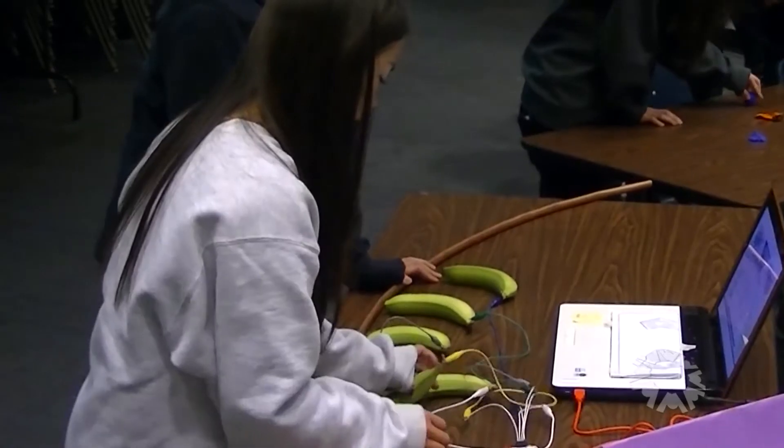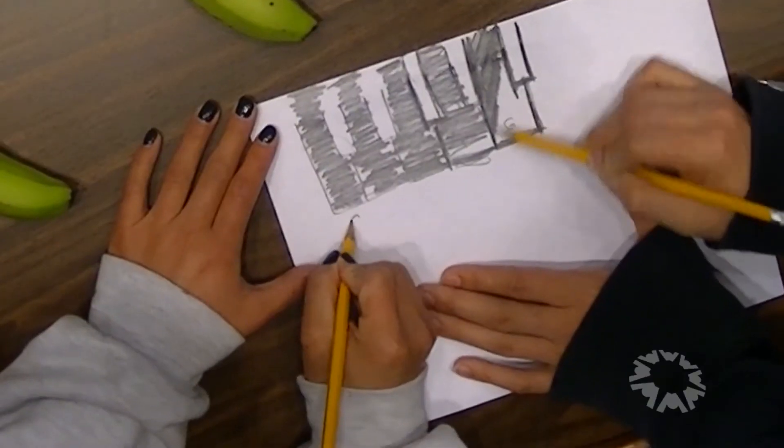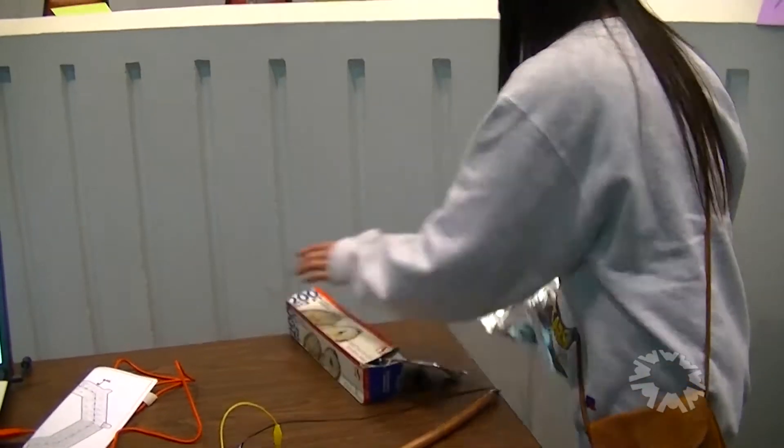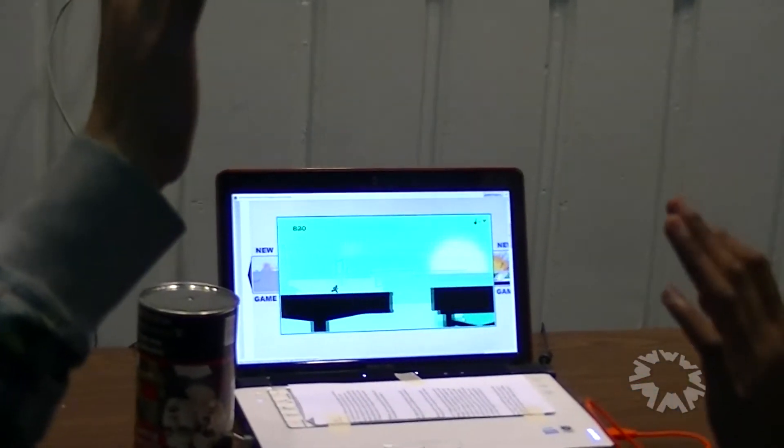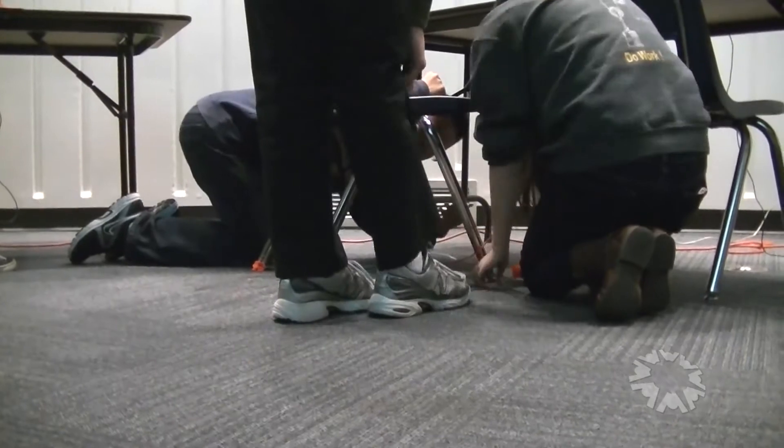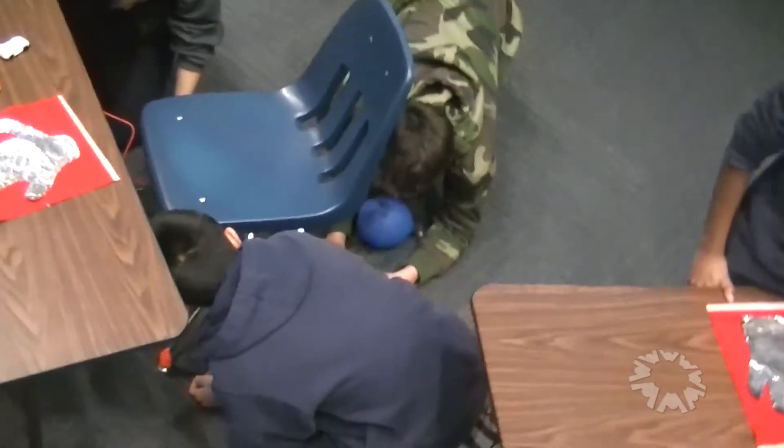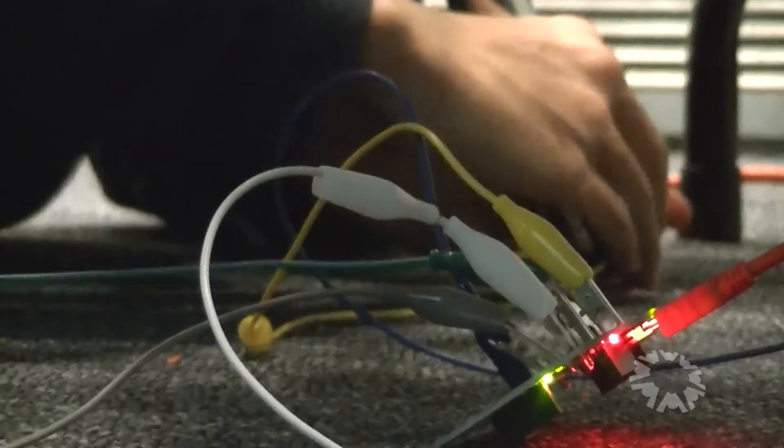We got creative and started to explore different ways to conduct electricity. Pretty soon we started using things we found around the room. This group decided to make a chair into a control pad.